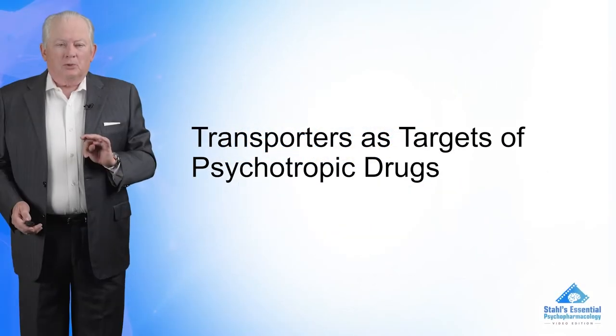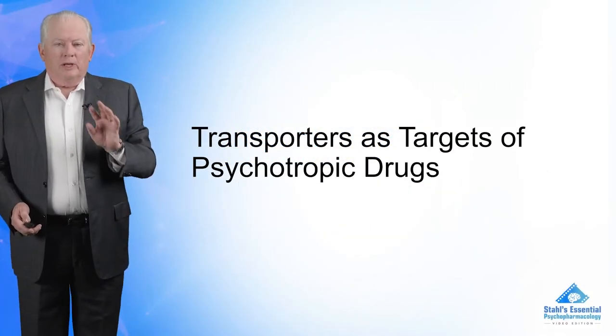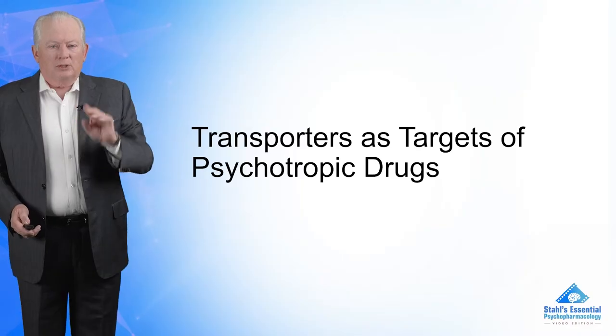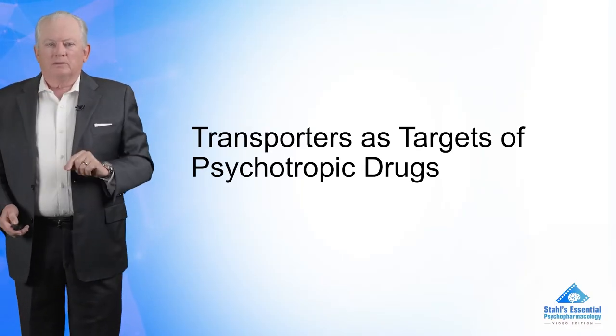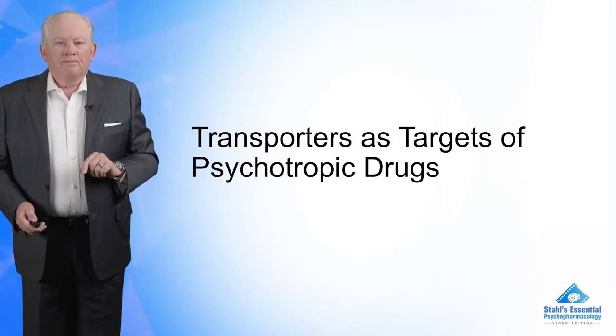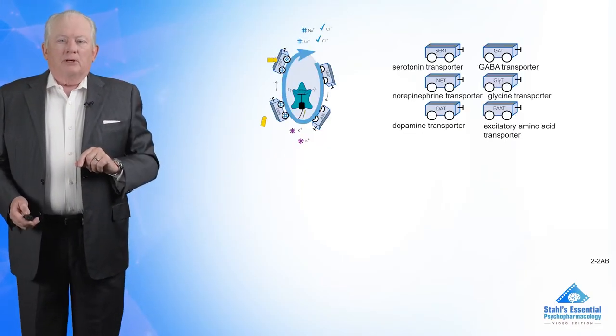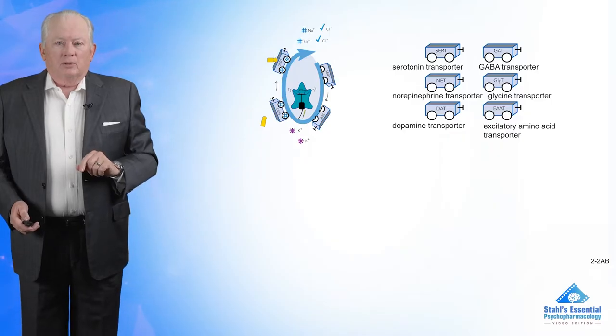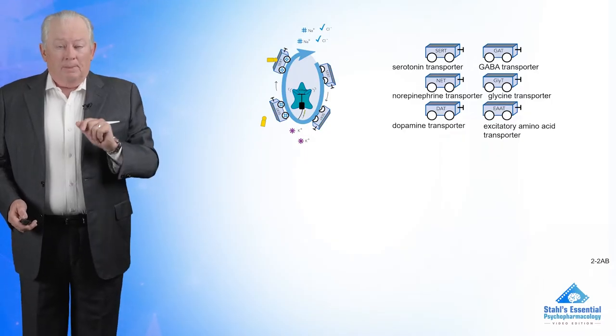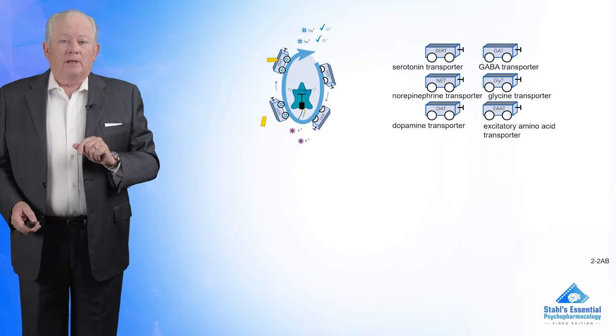Let's get started with the transporters. These are the ones that go in and out of the membrane 12 times, and there's a bunch of them. There's the serotonin transporter — some people call it the reuptake pump, sometimes just the serotonin reuptake pump.